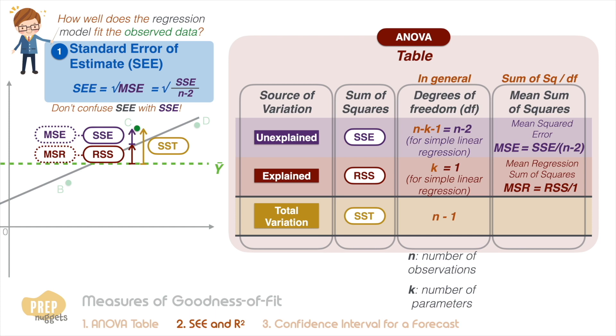The second approach is to measure how well the model explains the variations. To do this, we compute the coefficient of determination, which is simply the proportion of total variation that can be explained by the regression variation from the mean.